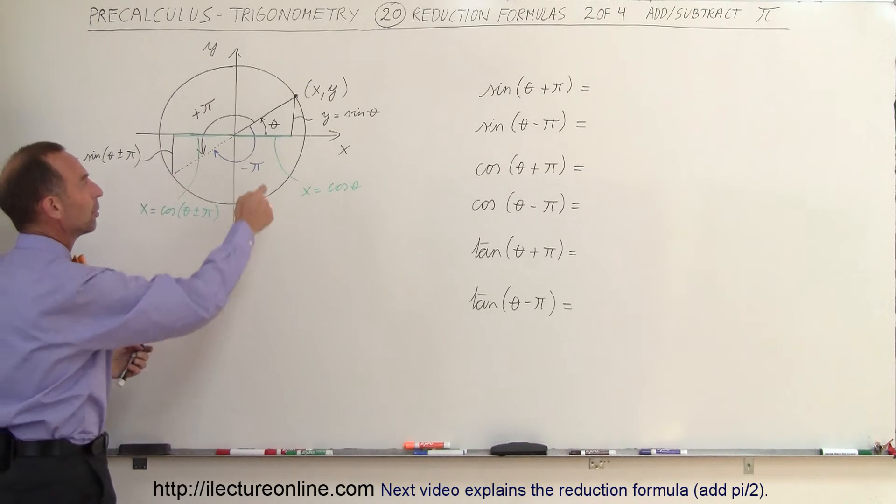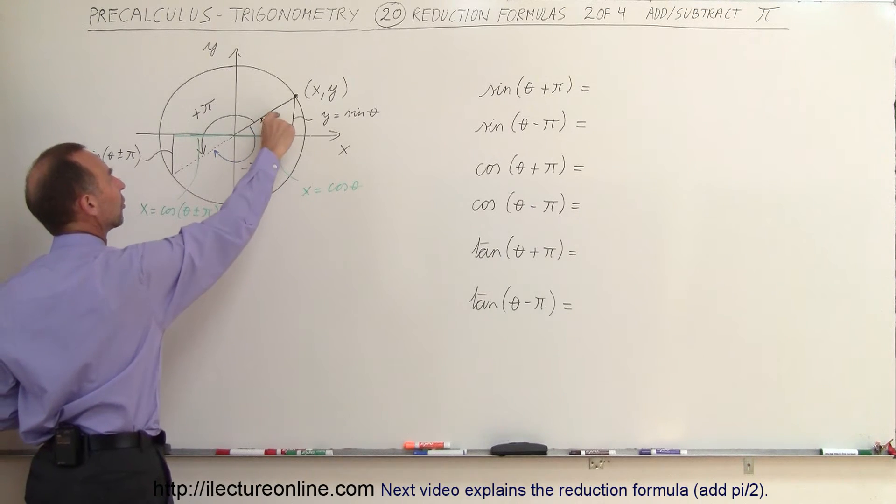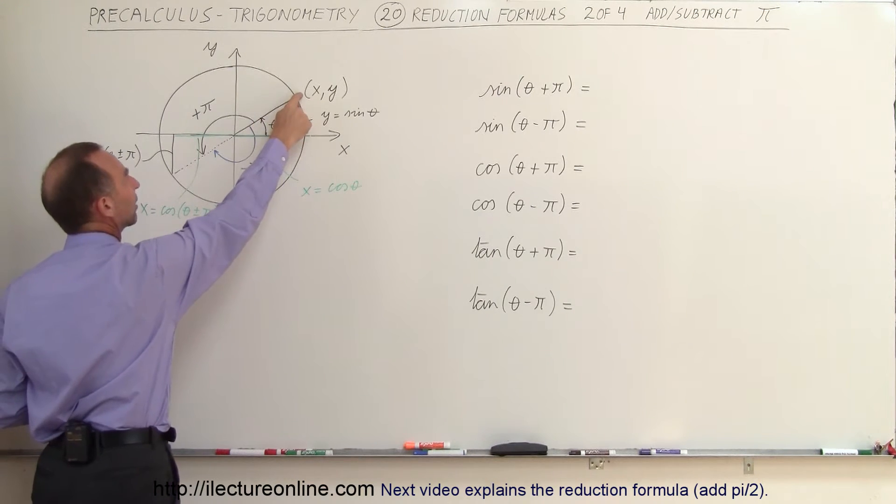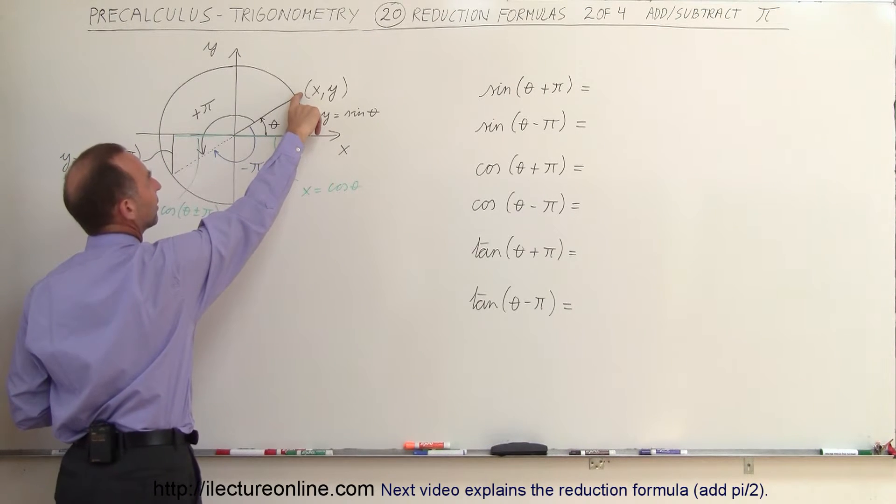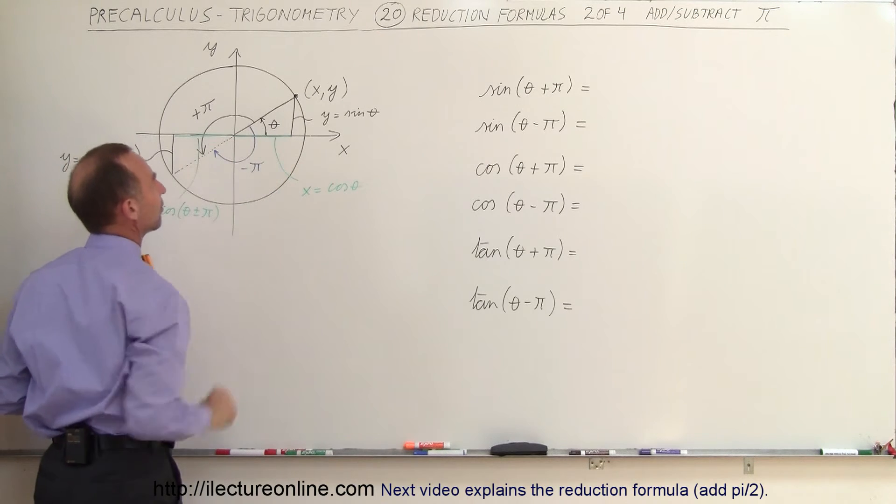Well let's just start again with a regular angle between 0 and 90 degrees. So the angle is theta. That gives us an xy value on the unit circle right there. This would be the sine of the angle, sine of theta, the y value, and this would be the cosine of the angle.